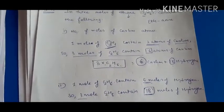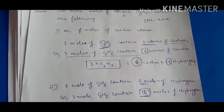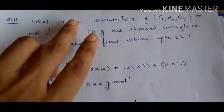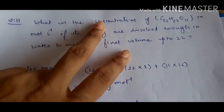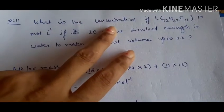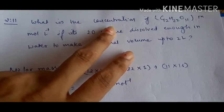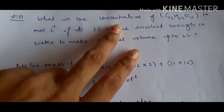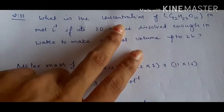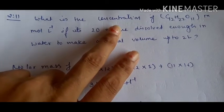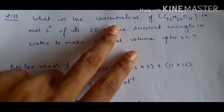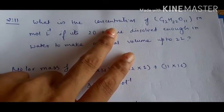Question number eleven is related to concentration. We can find concentration using molarity, molality, parts per million, or mass percentage. Here we need to find the molarity of a sugar solution.